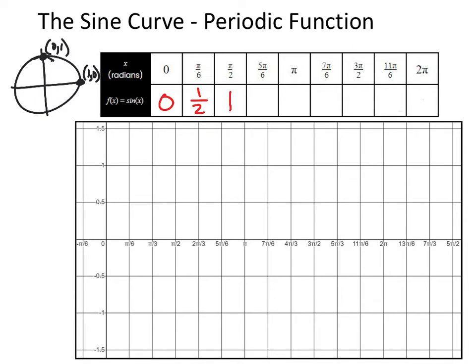For 5 pi over 6, that's in the second quadrant. We can use the reference angle of 30 degrees, or pi over 6, and take the sine of that. In the second quadrant, sine is positive, so it's still one half. At pi, the second coordinate is 0. 7 pi over 6 is the third quadrant, and sine is negative there, giving negative one half. Then in the fourth quadrant, sine is also negative with reference angle 30. At 2 pi, we're back to 0.